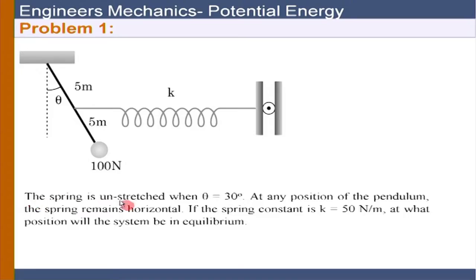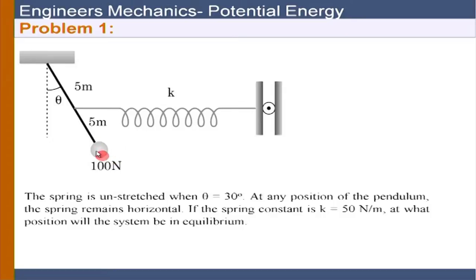Let us take the problems and go through them quickly. This is again a pendulum problem, only the thing is that a spring is attached. Assume the length of the spring is very long — that is one of the assumptions — and the spring can adjust its position, meaning it can vertically come down or go up. The spring is unstretched when theta equals 30 degrees.